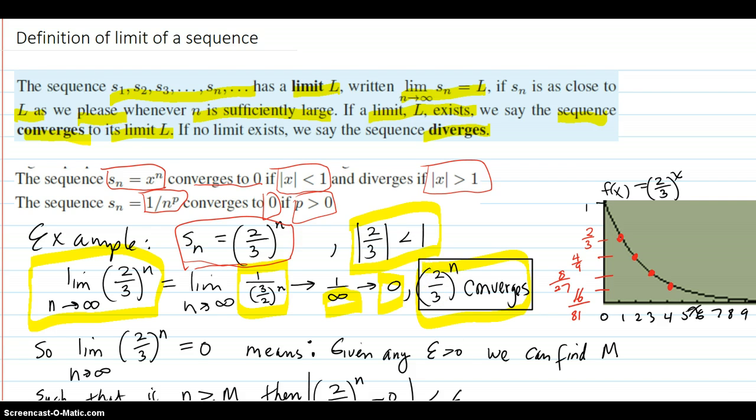And over here is your graph. Notice that this is a function of x, function of x equals 2 thirds to the x. So we can just go ahead and graph it, and we get this curve here. It comes down here like this. And if you just consider the integer values, which are represented by these red dots, then you see that those dots tend toward 0, limits out, the same way that 2 thirds to the x limits out to 0.